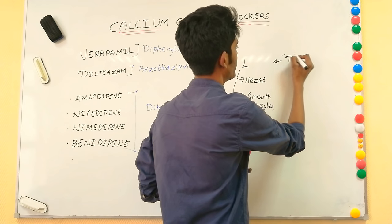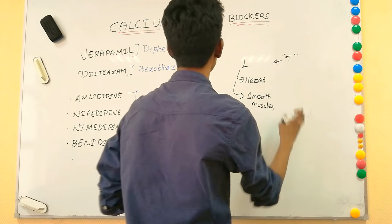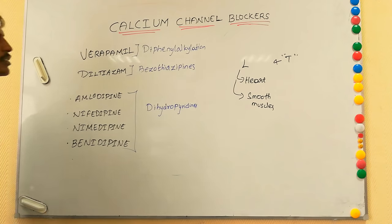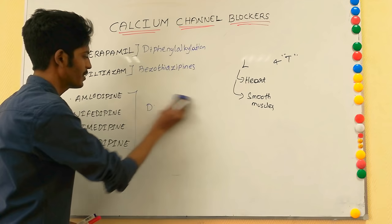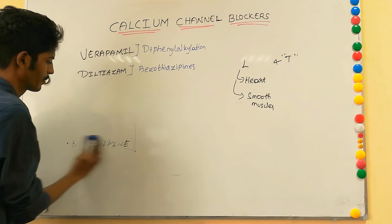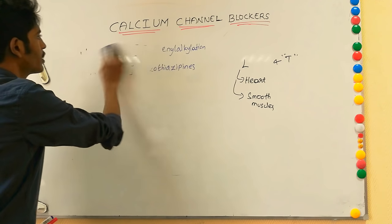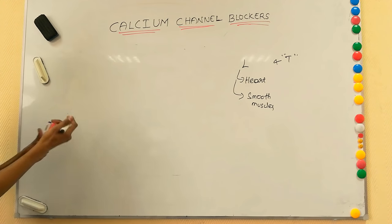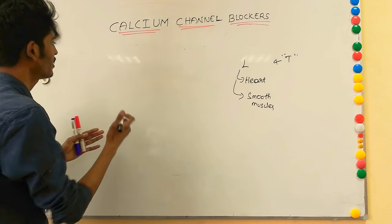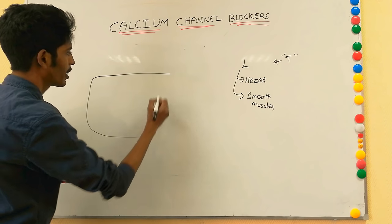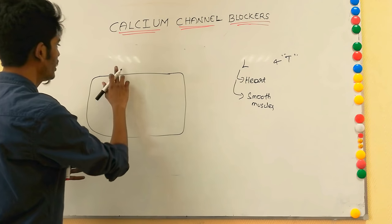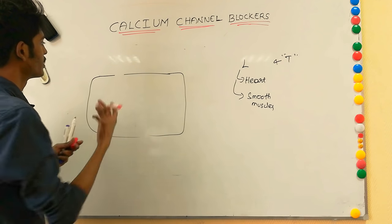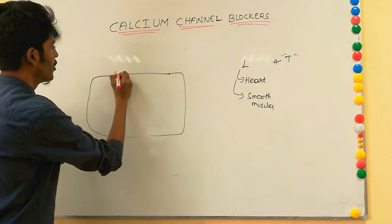T-type calcium channels are present in our CNS. We are not talking about T-type calcium channel blockers here — we are discussing L-type calcium channel blockers. For the mechanism of action, let's first understand what happens in smooth muscle whenever calcium enters the cell. We have a calcium channel, and within the cell we have the sarcoplasmic reticulum.